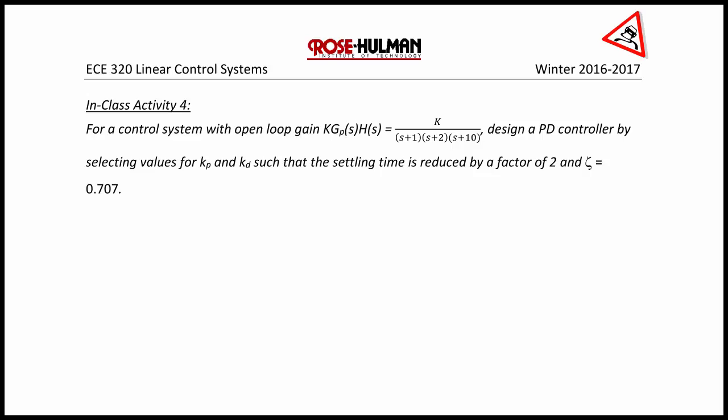Let's start the final activity for today's lecture. For a control system with open loop gain K·Gp(S)·H(S) equal to K over (S+1)(S+2)(S+10), design a PD controller by selecting values for Kp and Kd such that the settling time is reduced by a factor of 2 and zeta equals 0.707. Notice that a PD controller is a lead controller, so we're going to implement steps 1 through 5 as well as step 8 to check our work.